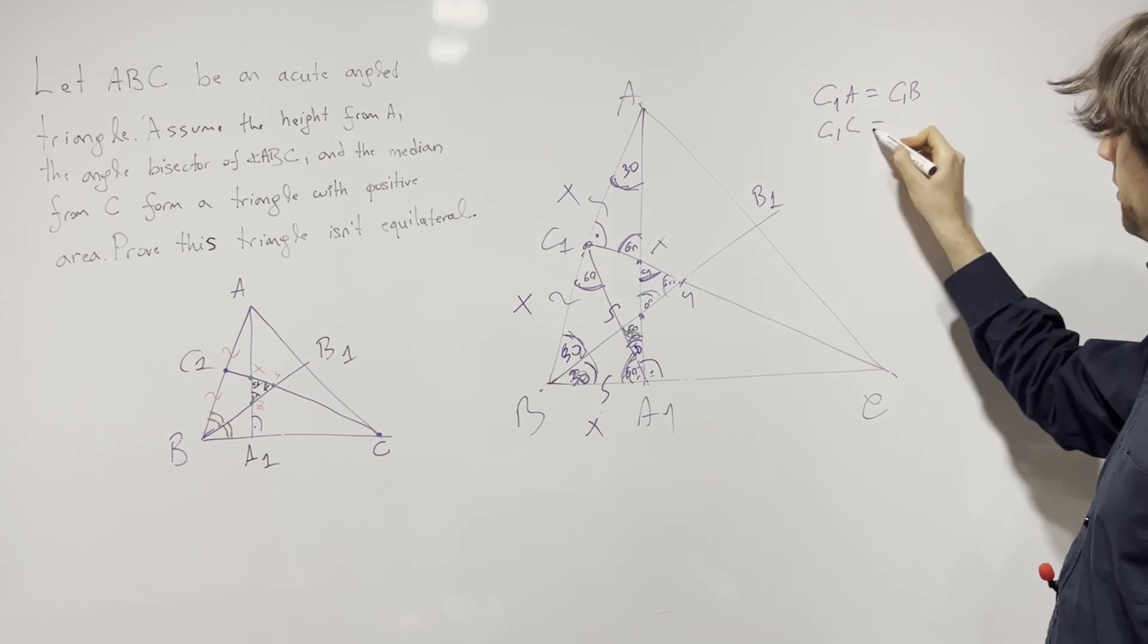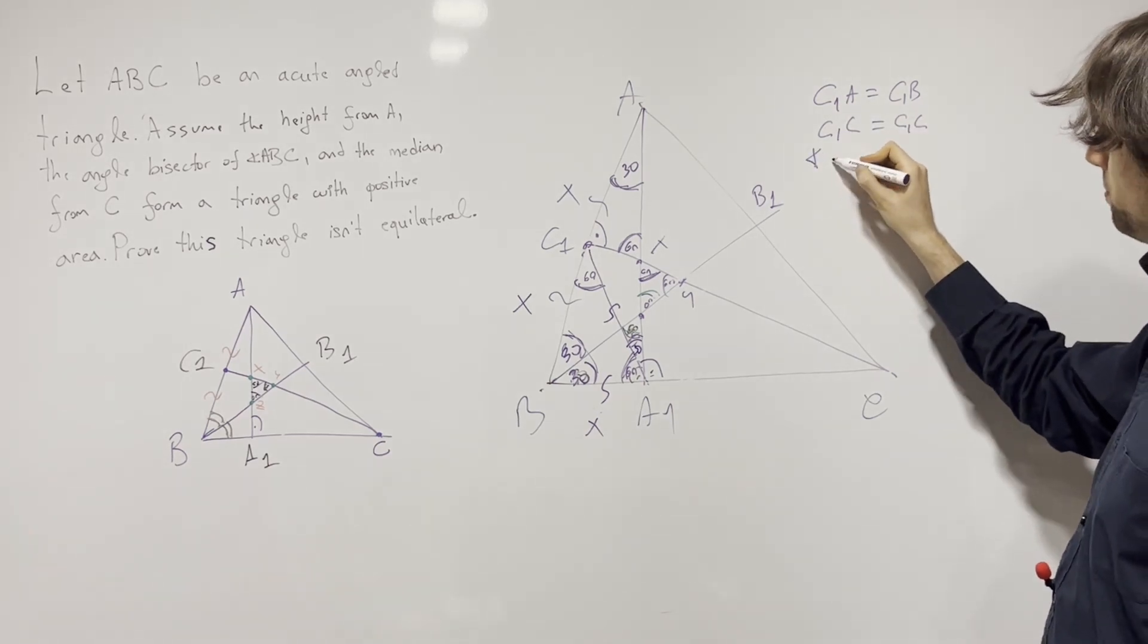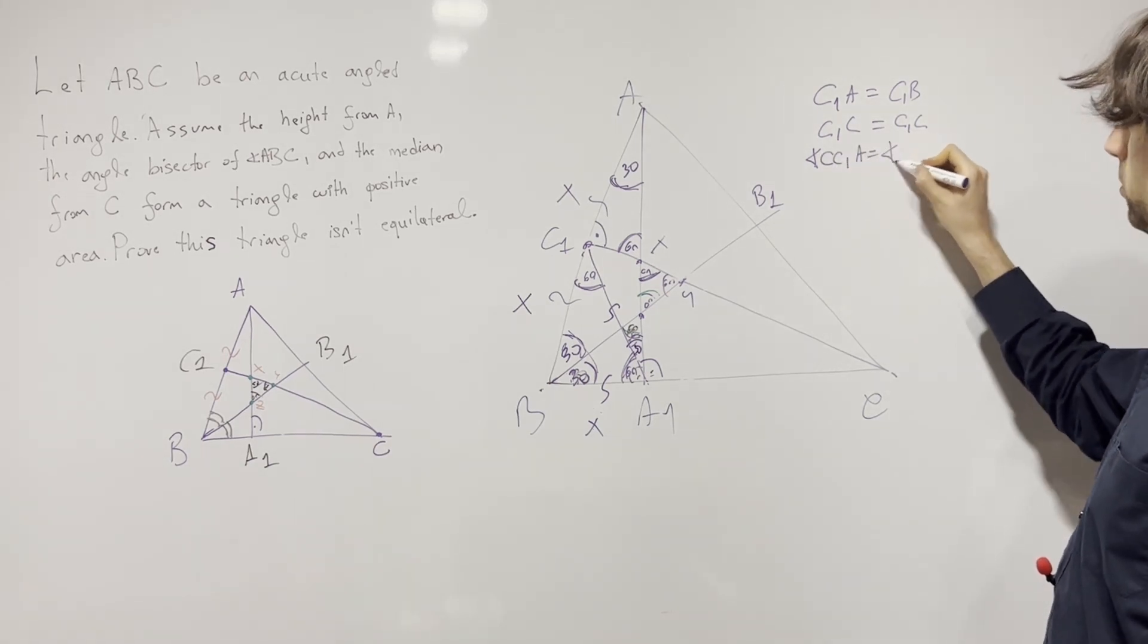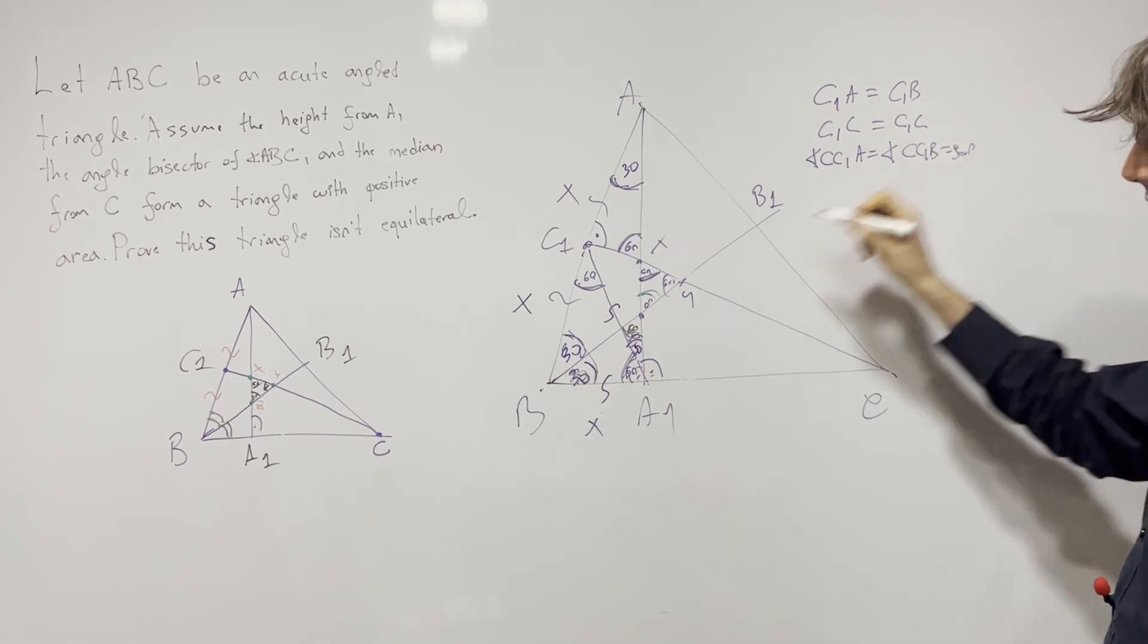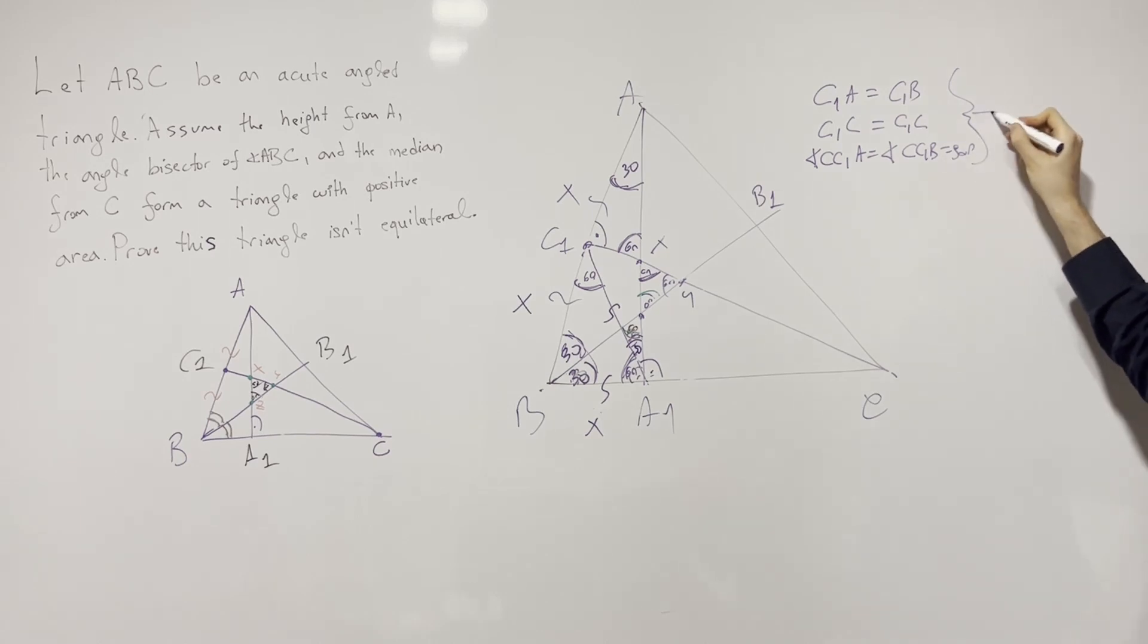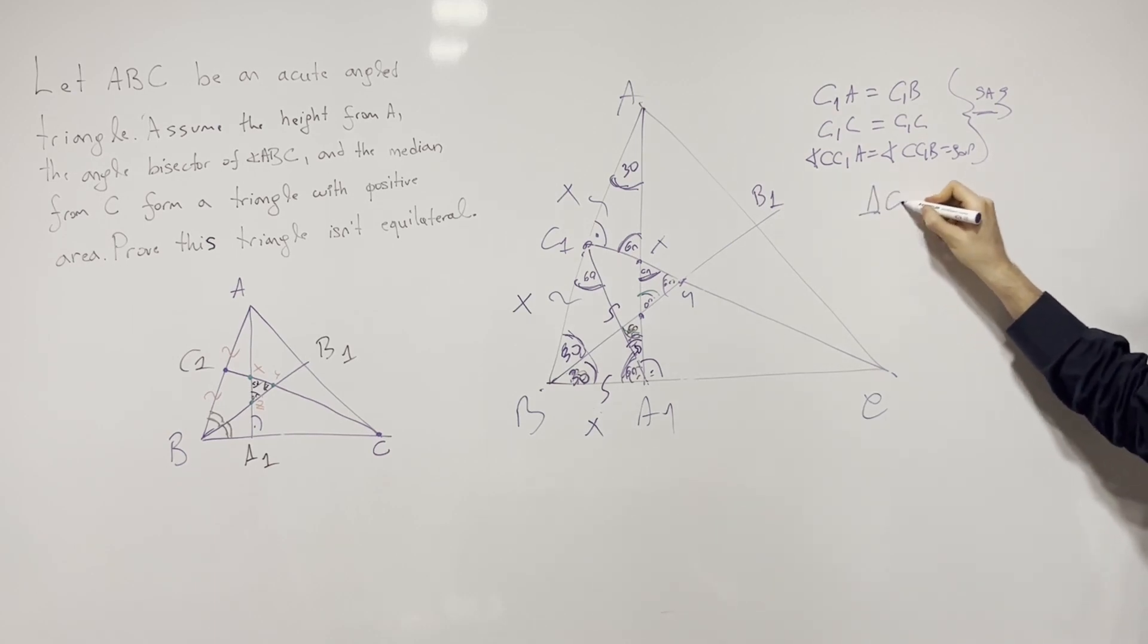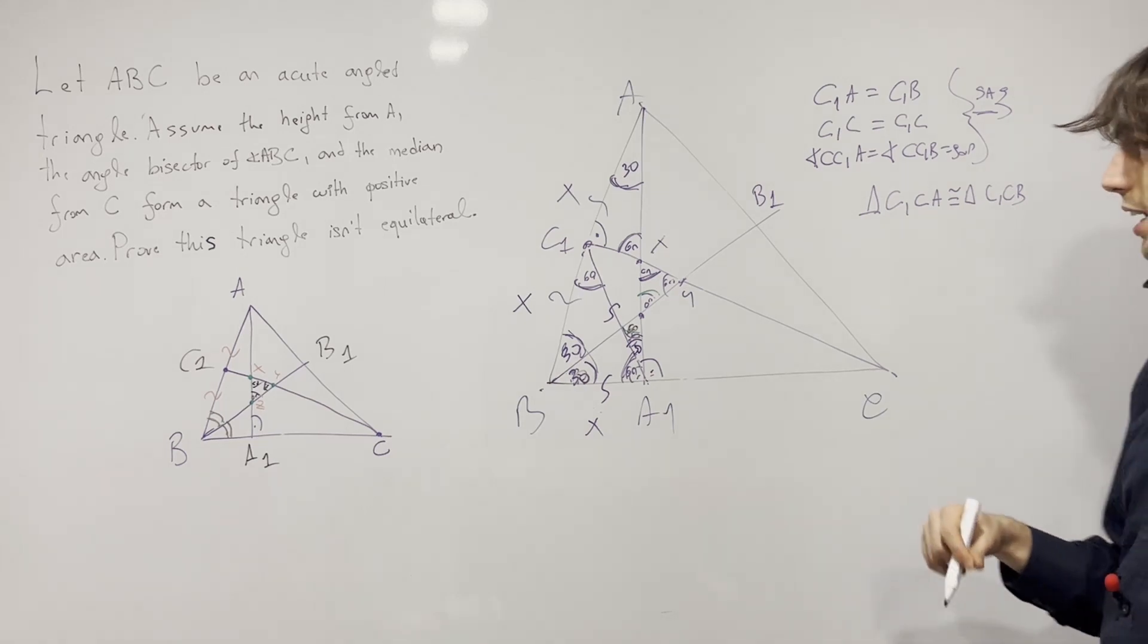You have CC1C is equal to C1C, and the angle, how should I call that, I'll call it CC1A is equal to the angle CC1B is equal to 90. And now from here we have from the side angle side congruency rule we get that the triangles C1CA is congruent to the triangle C1CB.